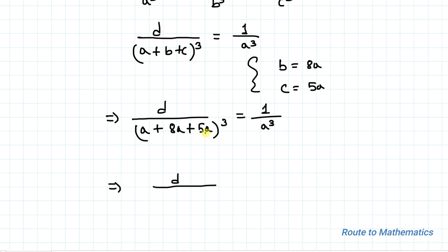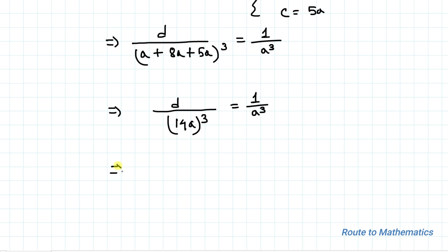So a + 8a + 5a = 14a. Therefore, d/(14a)³ = 1/a³. This implies d = 14³ × a³/a³, and the a³ terms cancel out.